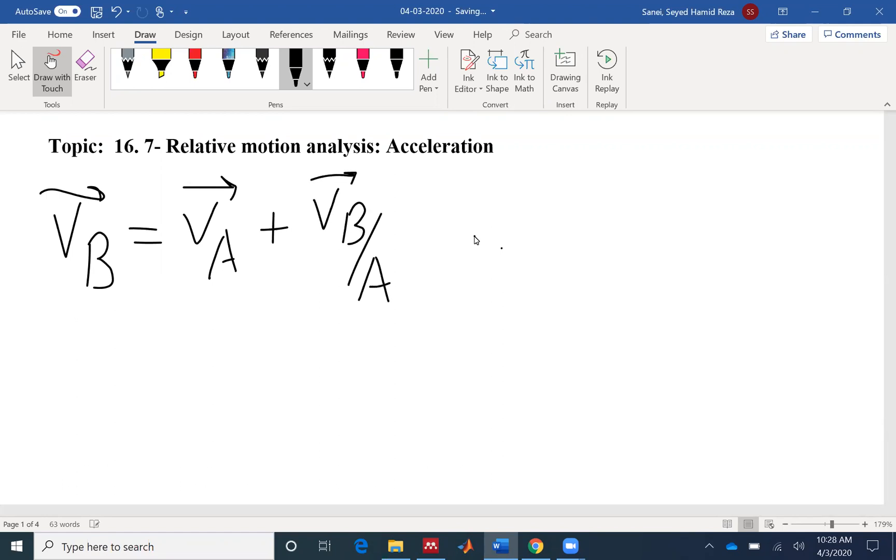And you need to remember that for rigid body, whenever we are talking about relative velocity or relative acceleration, we are talking about two points on the same rigid body. So it's different than what we talked about relative velocity and acceleration for a particle. So the first component is the translation component, and the second component is related to the rotational aspect of the rigid body.